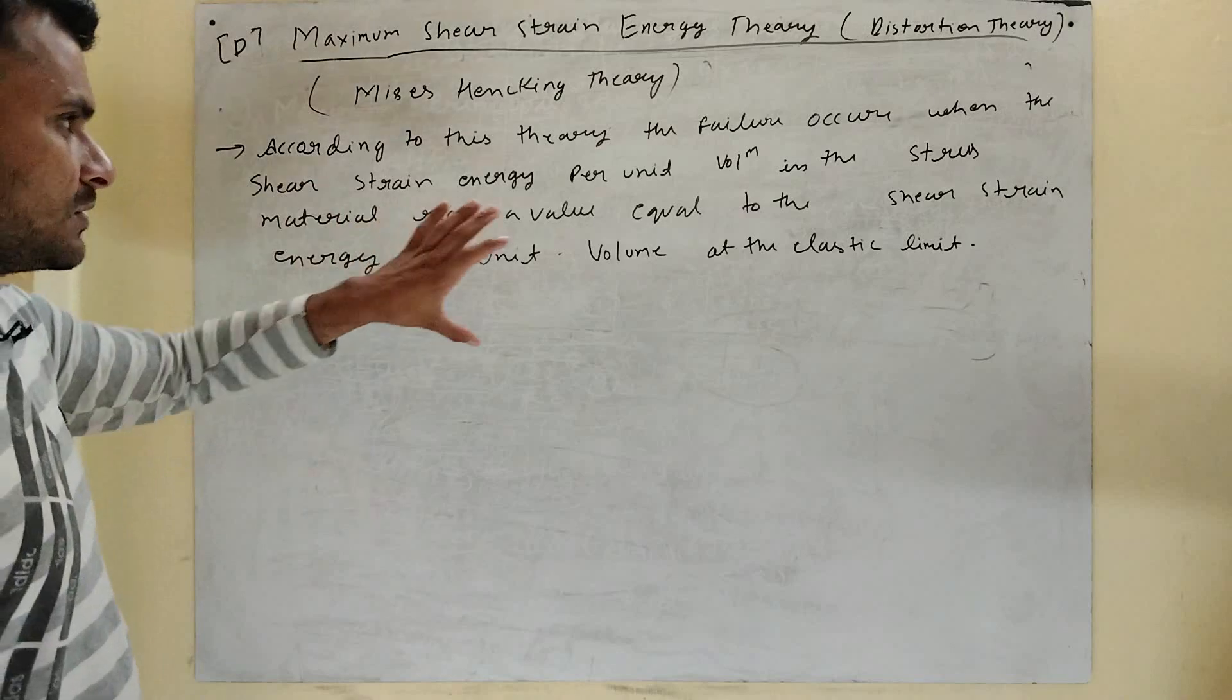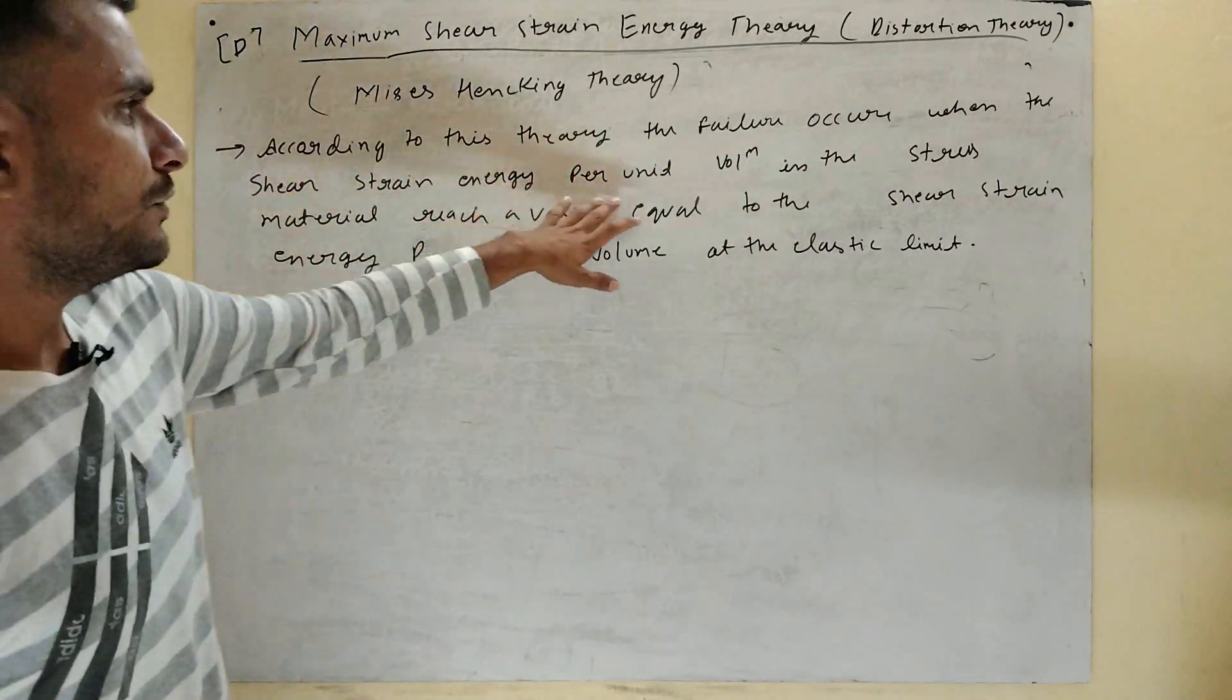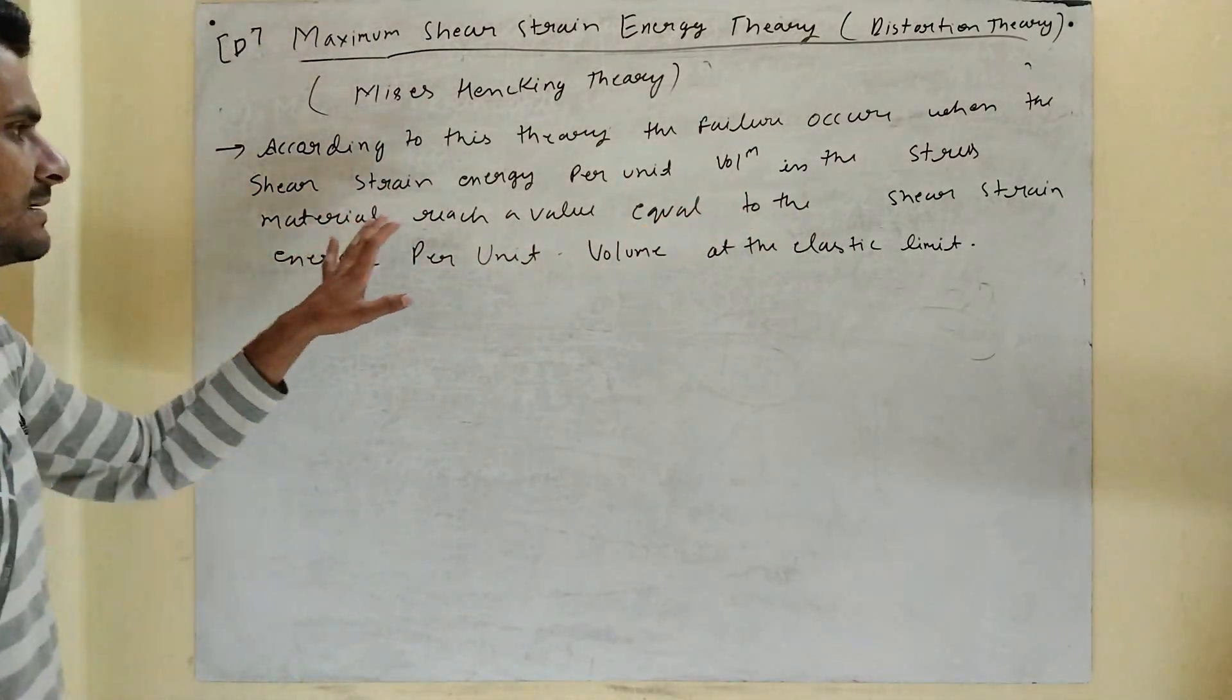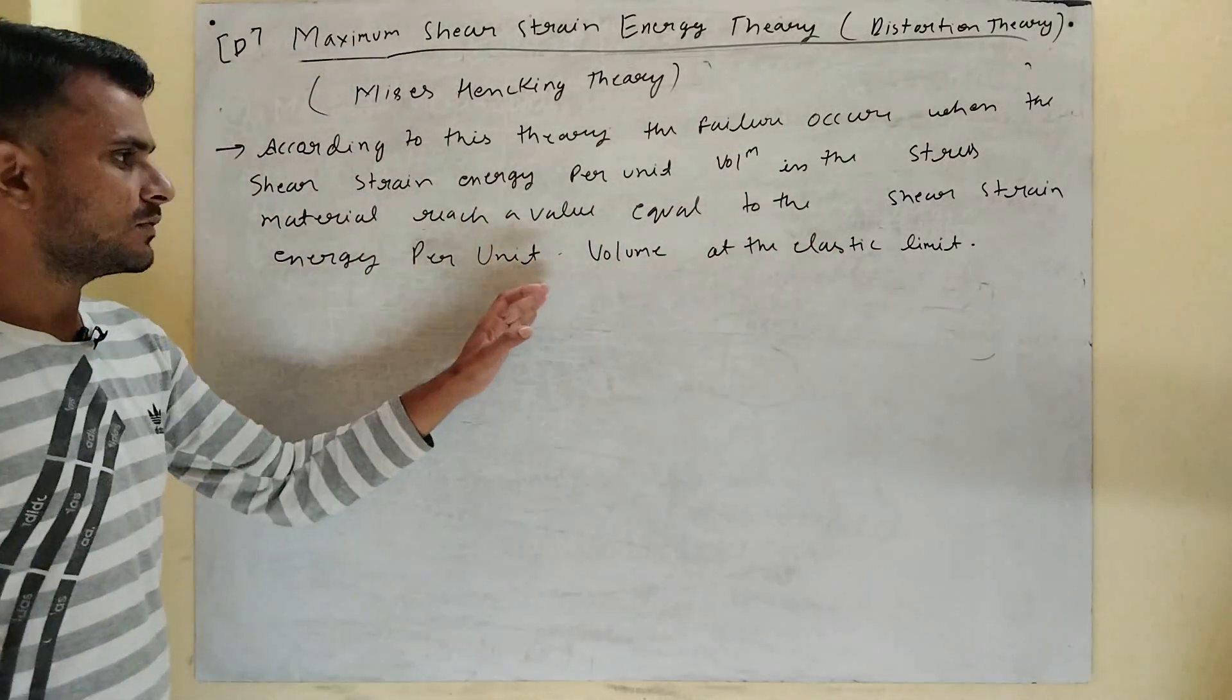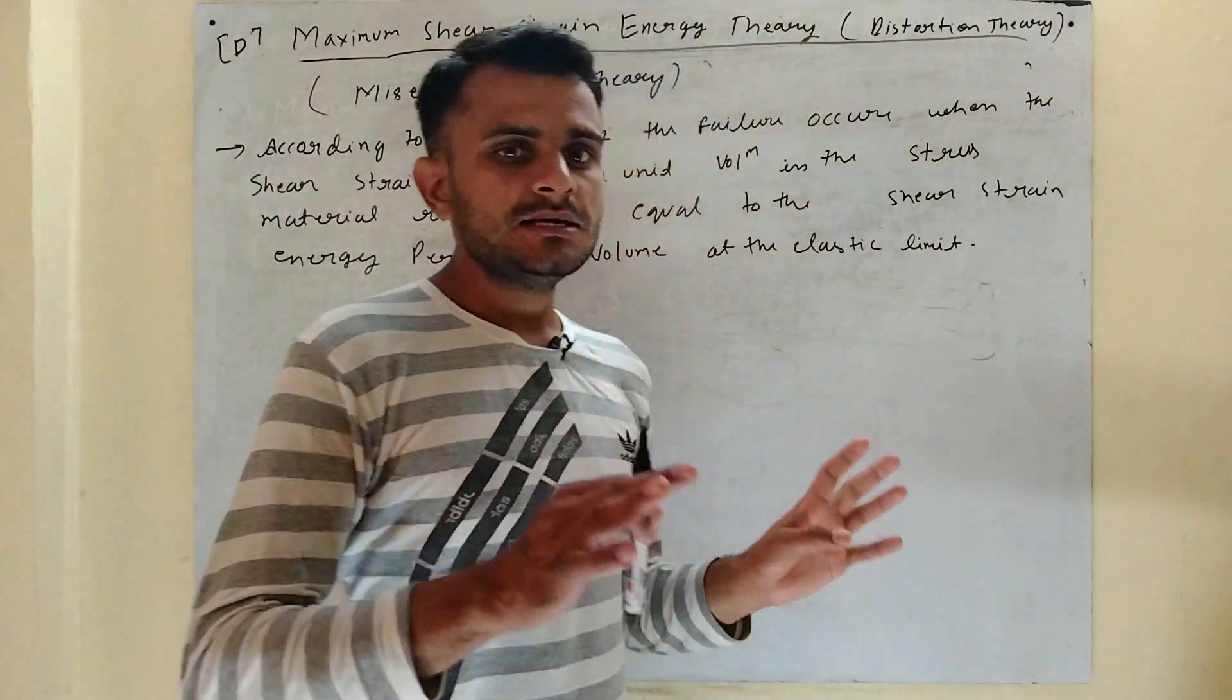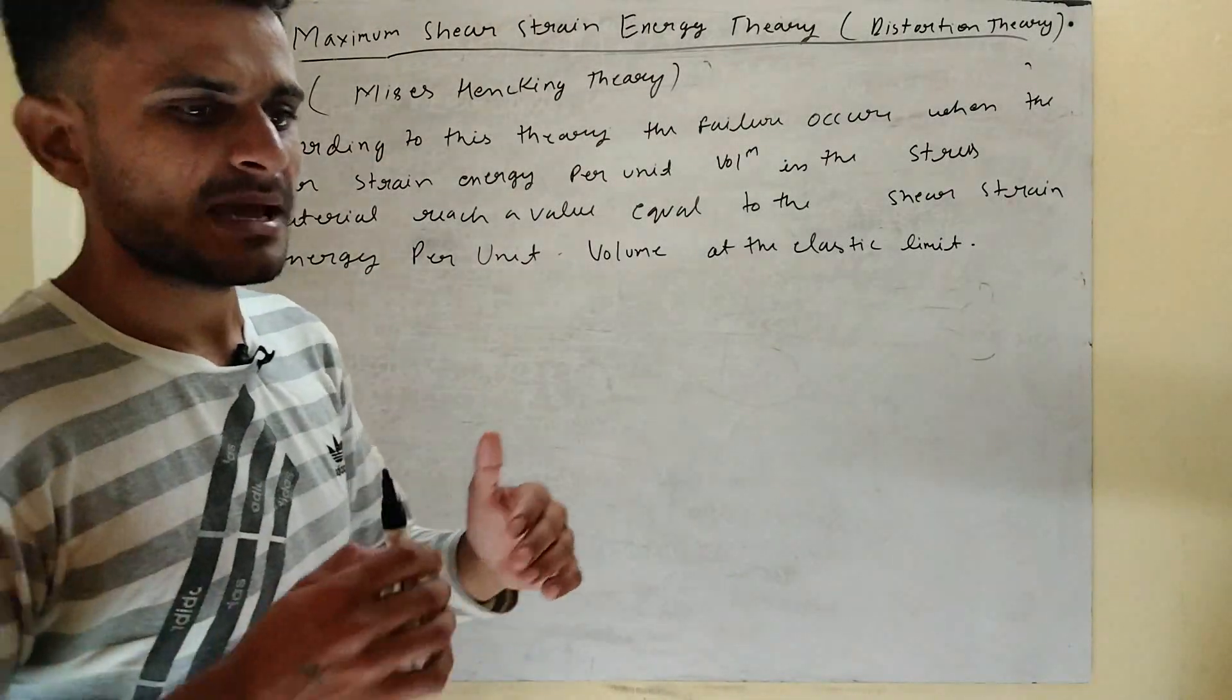According to this theory, the failure occurs when the shear strain energy per unit volume in a stress matter reaches a volume equal to the shear strain energy per unit volume at the elastic limit. This means maximum energy.